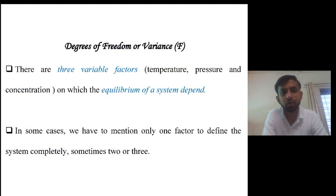Degrees of freedom, which is also called variance. Equilibrium of a system always depends on three variable factors: temperature, pressure and concentration.